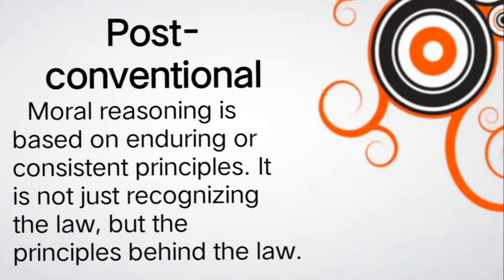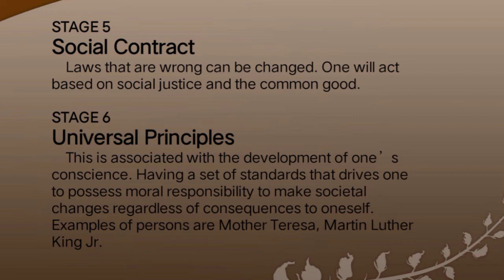Now let's discuss the post-conventional level — the last level of moral development in Kohlberg's theory. It is based on enduring and consistent principles — not just recognizing the law, but understanding what is behind the law. Stage five is the social contract: the law can be seen as either right or wrong and can be changed. One will act based on social justice and the common good.